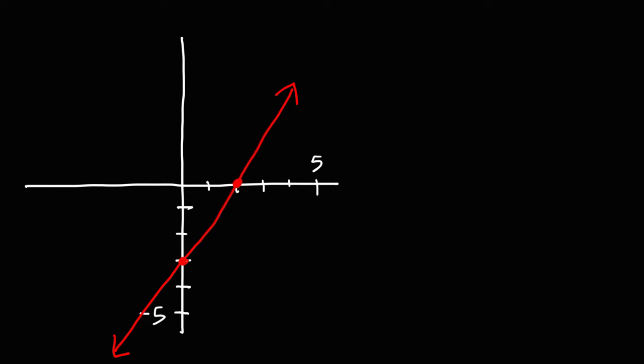Now consider the graph that we have. How would you find the x and y-intercepts of the line shown on the graph? The x-intercept is where the line touches the x-axis, and the y-intercept is where the line touches the y-axis. It touches the x-axis at x equals 2, so the x-intercept is (2, 0).